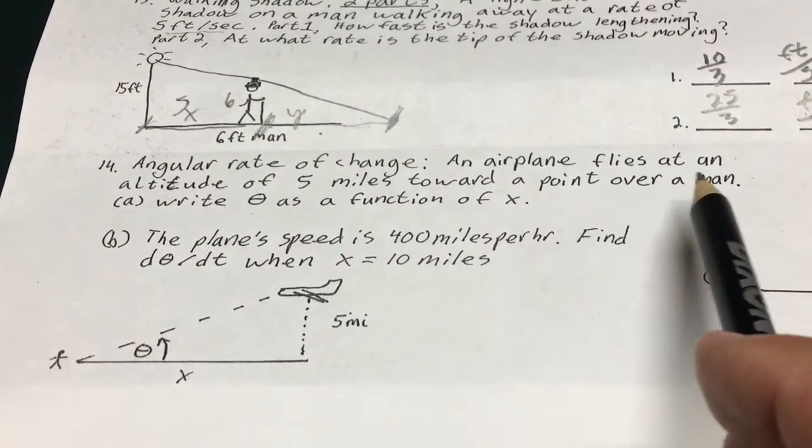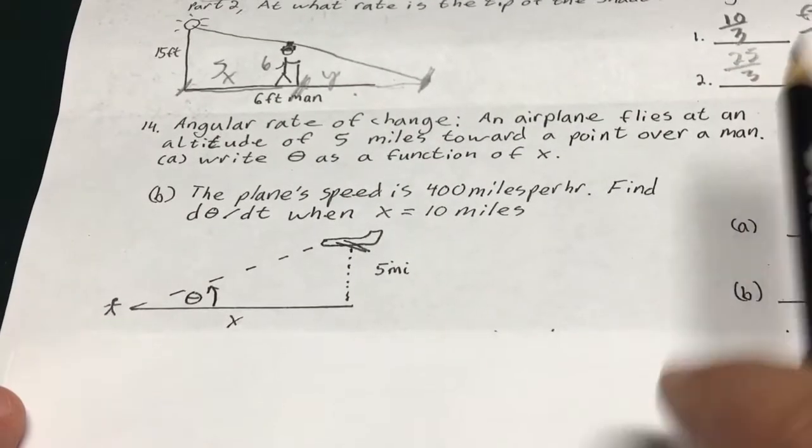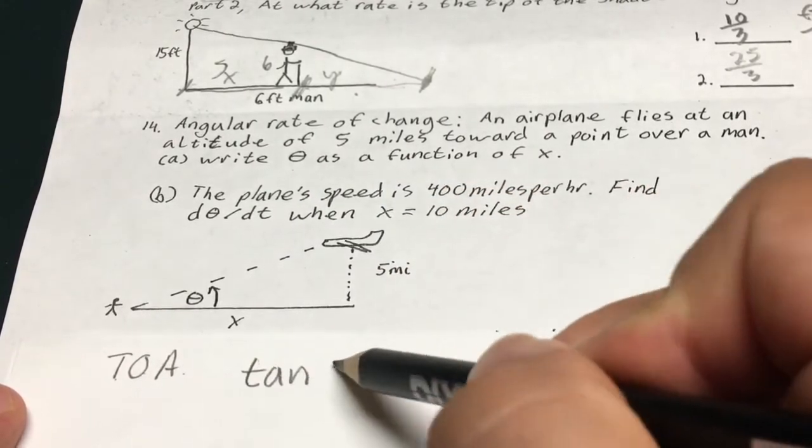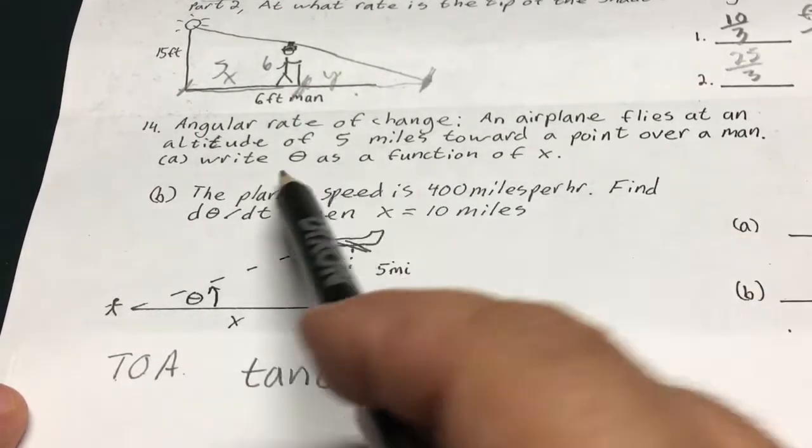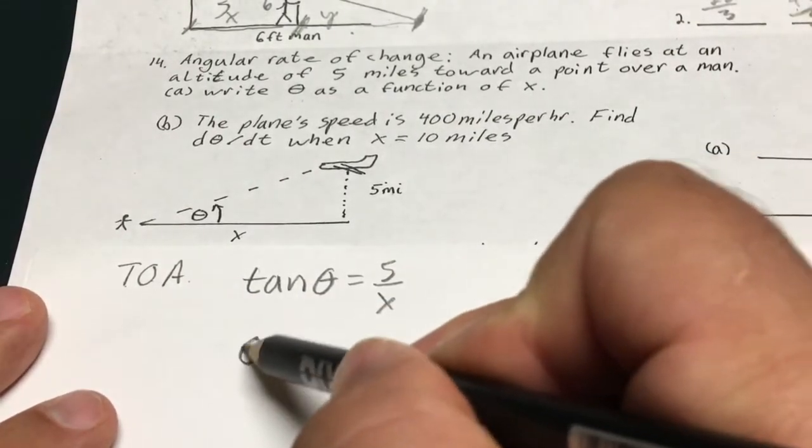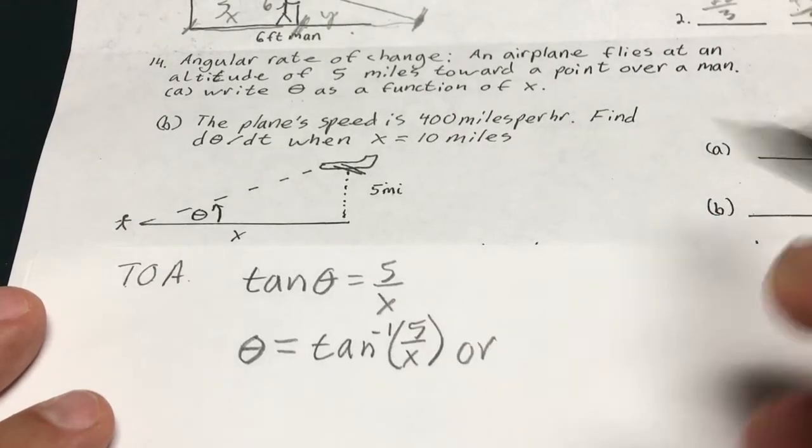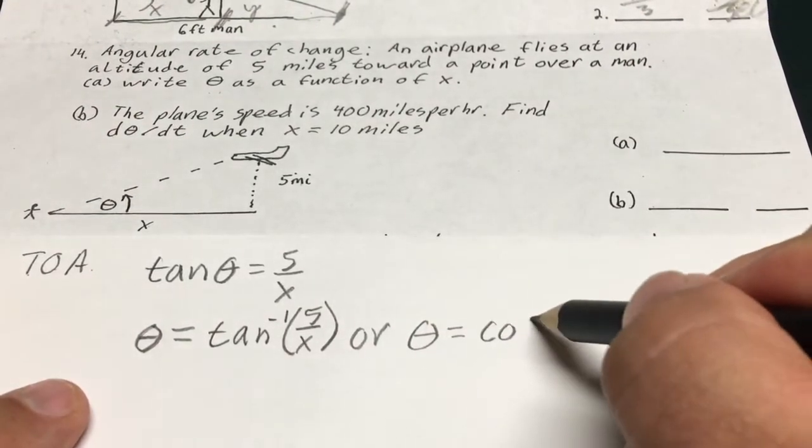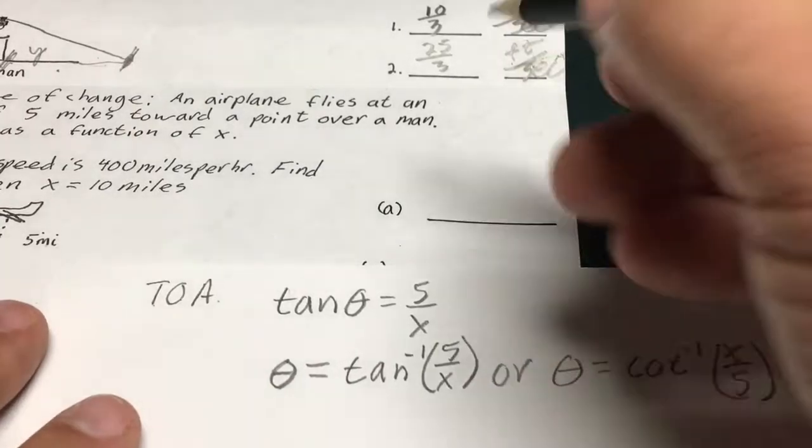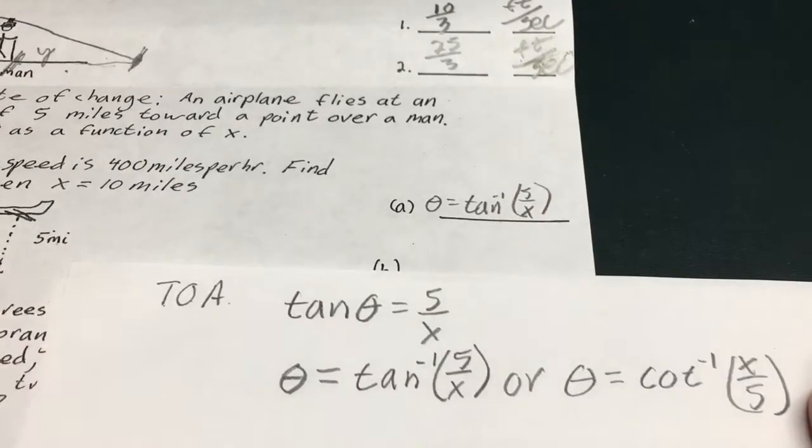This one here is a little tricky. Angular rate of change. Airplane flies in and out to 5 miles. It's in the drawing. Towards the point over a man. Write theta as a function of x. So I'm just going to look at this as a tangent function from SOHCAHTOA. Tangent equals opposite over adjacent. So I'm going to say tan theta equals 5 over x. Now it says it wants me to write theta as a function of x. So I want to get theta by itself is what I believe this to mean. So I'm going to take the inverse tan of both sides. So it's going to be theta equals arctan of 5 over x. And don't forget it could also be represented as theta equals arc cotan of x over 5. Just to be a little tricky. Either way. I'd like to go with my first one. So I'm going to write my first one up there for part A as theta equals arctan of 5 over x. Not that bad.